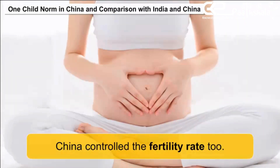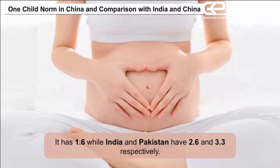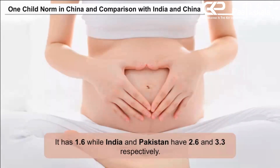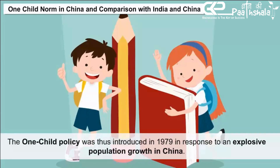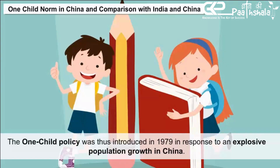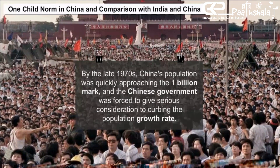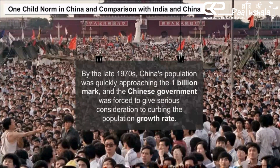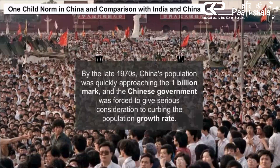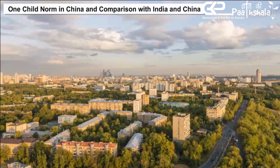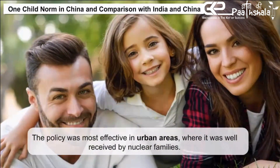China also controlled its fertility rate at 1.6, while India and Pakistan have 2.6 and 3.3 respectively. The one-child policy was introduced in 1979 in response to explosive population growth in China. By the late 1970s, China's population was quickly approaching the 1 billion mark, and the Chinese government was forced to give serious consideration to curbing the population growth rate. The policy was most effective in urban areas, where it was well received by nuclear families.